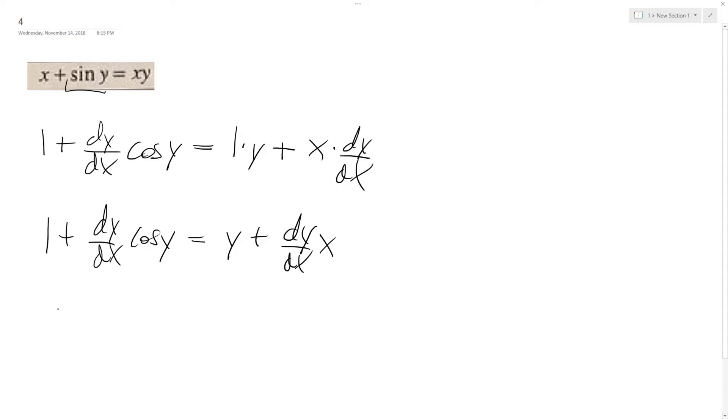So we have dy dx cosine y minus dy dx x is equal to y minus 1.